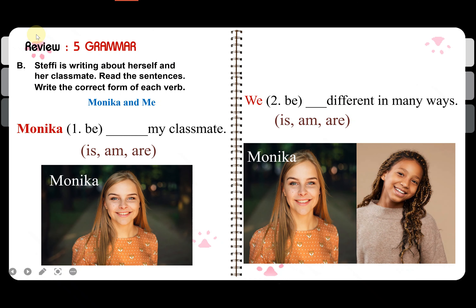Review grammar. Sophie is writing about herself and her classmate. Read the sentences and write the correct form of each verb in present simple. 'Monika and me' — Monika is singular, so the verb to be used with Monika is 'is,' not 'am' or 'are.' She is my classmate.